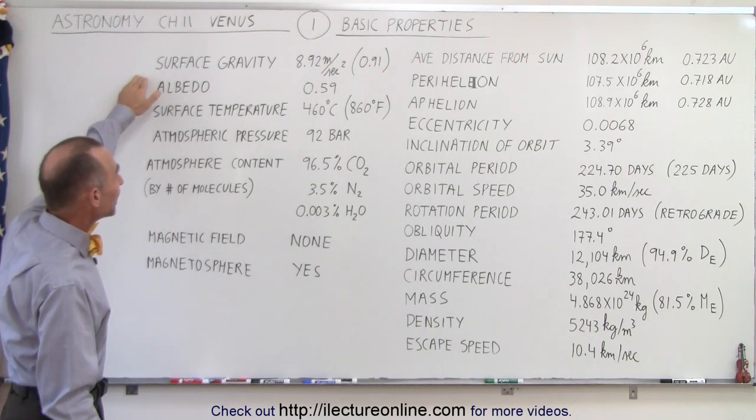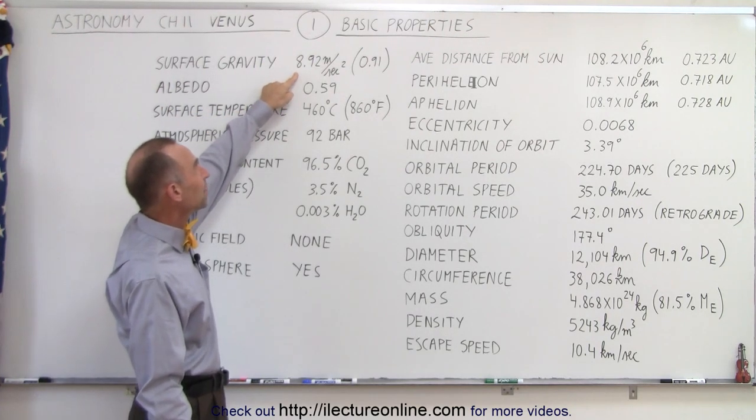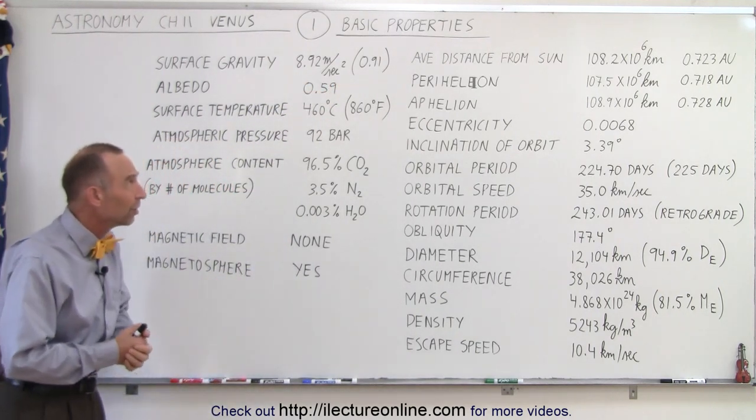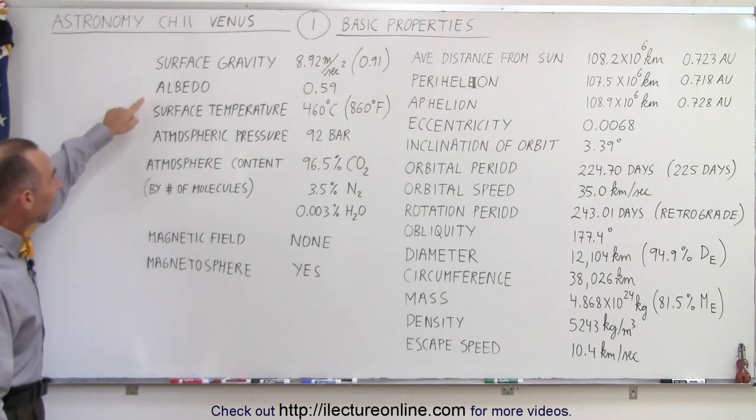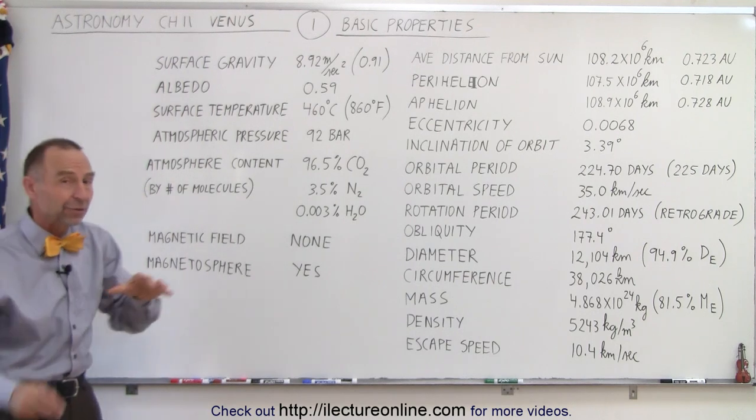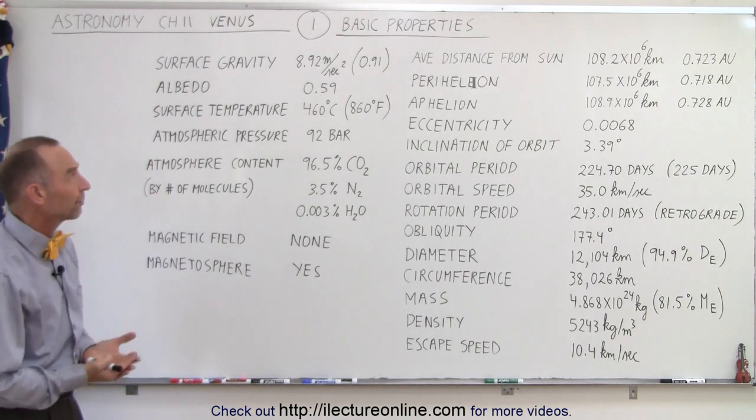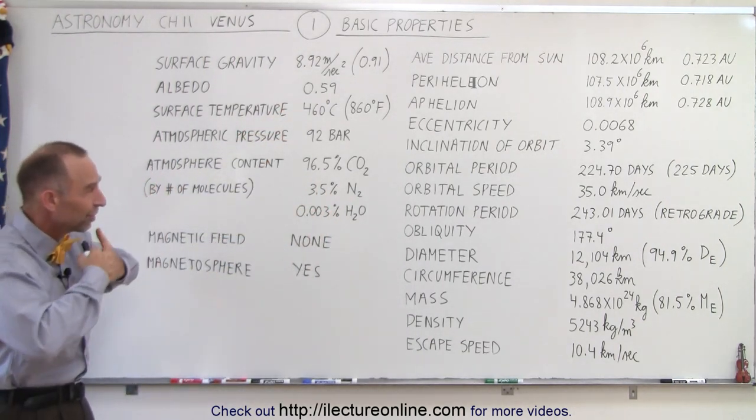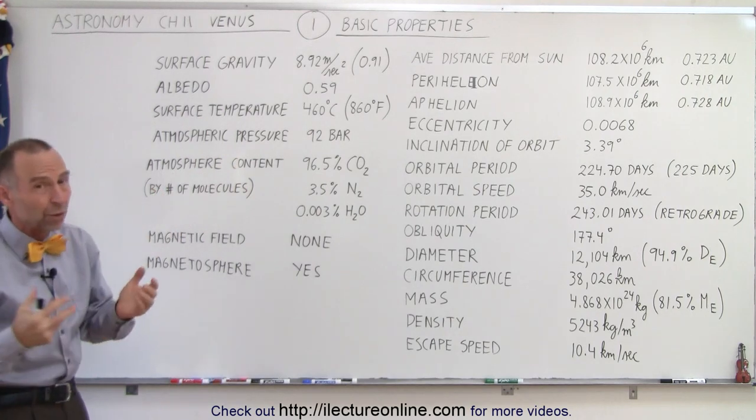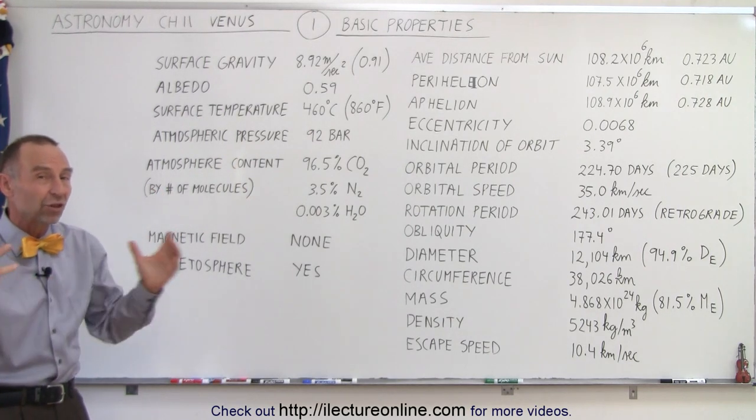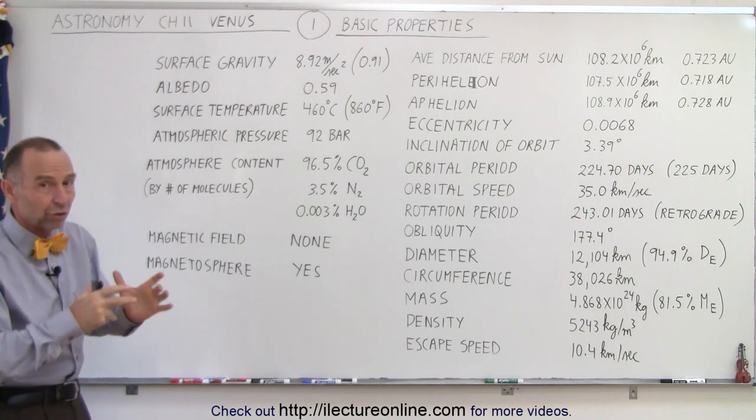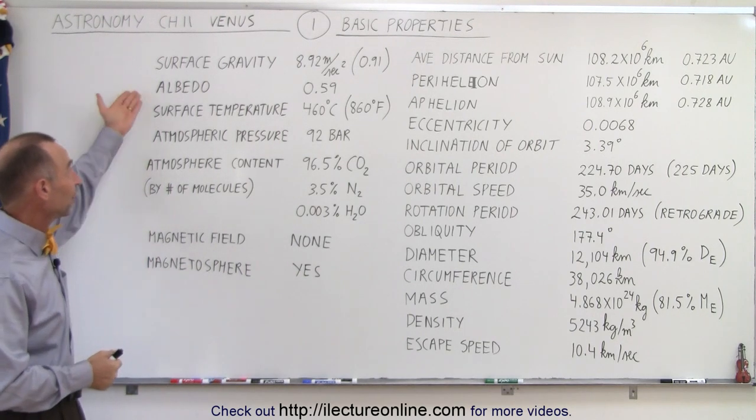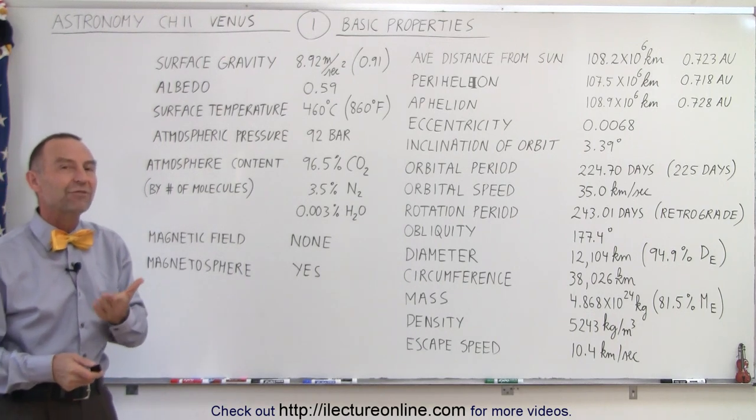The surface gravity is an acceleration of 8.92 meters per second squared, or 0.91, which is 91 percent the gravitational attraction of Earth's surface. Albedo is quite high for Venus because of that complete cloud cover at 0.59, which means 59 percent of the light it receives is reflected back into space. This is one reason why Venus is such a bright object in the sky. It's close, fairly large, and has a very high albedo, so yes, it is the brightest object after the moon.